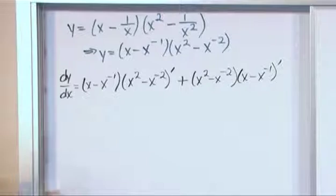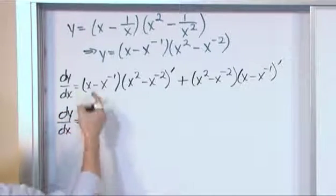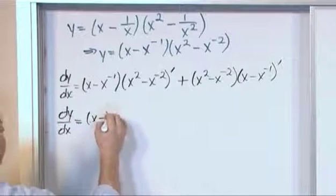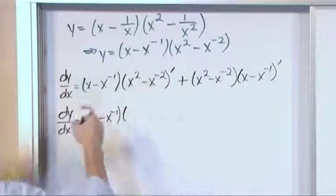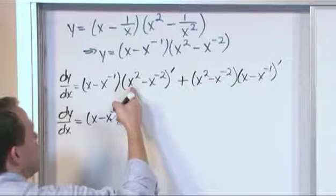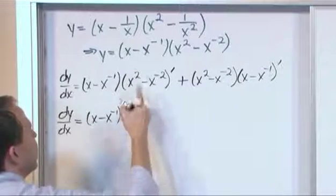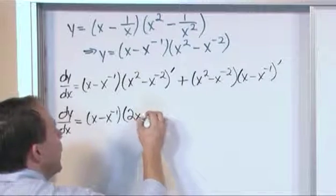So now we just have to work with these derivatives. dy dx equals this one, leave it alone. x minus x negative 1, it just hangs out for a little while. Let's take the derivative of what we have here. The derivative of x squared is 2x, because the 2 comes down x to the first power because I subtract the exponent off.